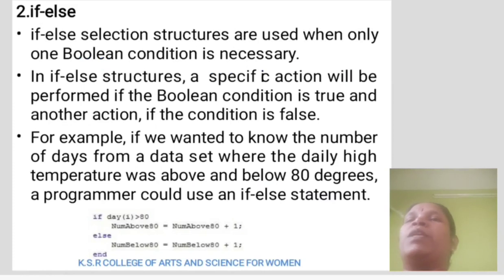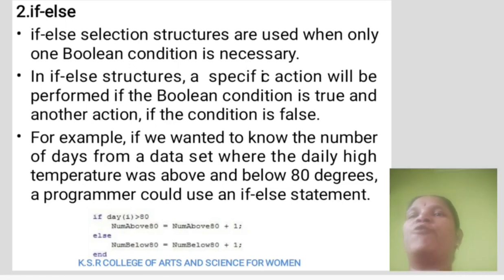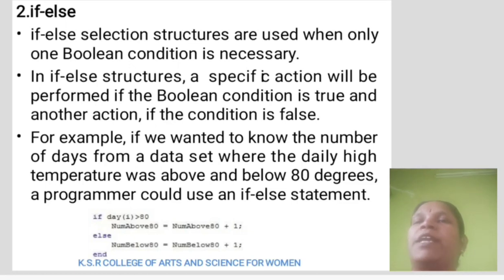Second, if-else. If-else selection structure is used when only one Boolean condition is necessary. In if-else structure, a specific action will be performed if the Boolean condition is true, and another action if the condition is false. For example, if we want to know the number of days from a dataset whether the daily high temperature was above and below 80 degrees, a program could use an if-else statement: if day_temp greater than 80, num_above_80 equals num_above_80 plus 1. Else, num_below_80 equals num_below_80 plus 1. End.